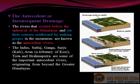Antecedent or inconsequent drainage: The rivers that existed before the upheaval of the Himalayas and cut their courses southward by making gorges in the mountains are known as antecedent rivers. The Indus, Sutlej, Ganga, Sarju, Kali, Arun — a tributary of the Kosi — Tista, and Brahmaputra are some of the important antecedent rivers, originating from beyond the greater Himalayas.